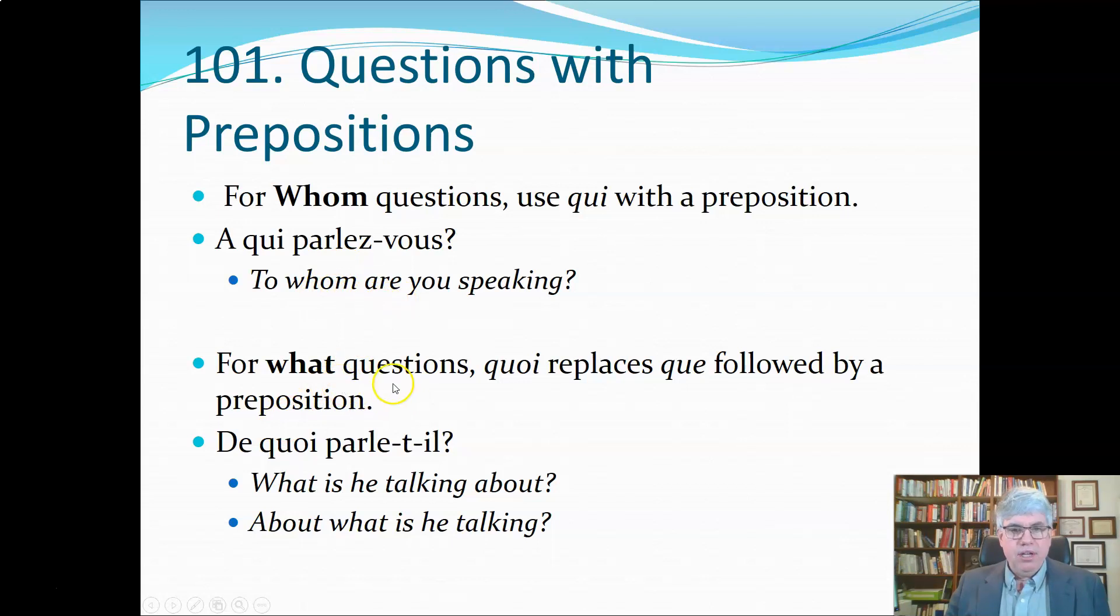For what questions, que changes to quoi because otherwise it's just too short; you wouldn't be able to pronounce things too easily. So instead of saying de que, we say de quoi or whatever preposition we're doing. De quoi parle-t-il? Of what is he talking? So what is he talking about, or about what is he talking? Quoi means the same thing as que here, but we change it to quoi because de que wouldn't sound very good. What is he talking about? About what is he talking?